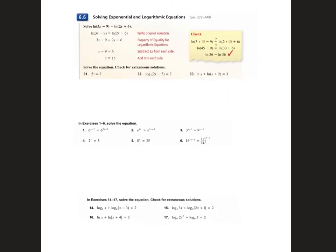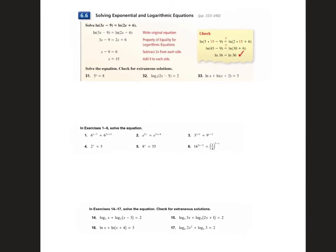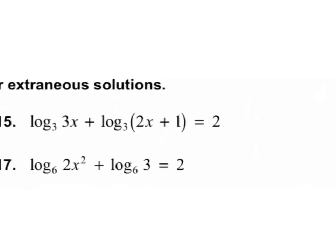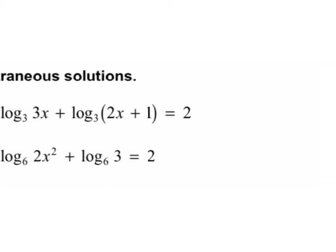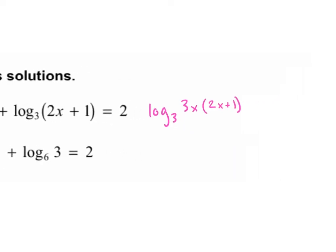Let's look at section 6.6. Any questions from 6.6? Let's look at number 15. We want to condense these two logs to just be one log. Before we can cancel out the 3, it just has to be one log. Since we're adding, we want to condense it to 1. So we multiply — we have log base 3 of (3x times (2x plus 1)). We're just condensing it to 1 log by multiplying them.